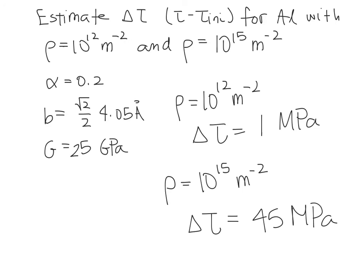So strain hardening is not as effective a strengthening mechanism as some others; however, with a modest increase in dislocation density we are able to increase the strength by a reasonable amount. This is one way in which work hardening a material can be used to increase the strength. In this video we looked at the different strengthening mechanisms and went through the equation for strain hardening. In the following videos, we will talk about the other strengthening mechanisms possible for metals.